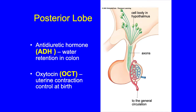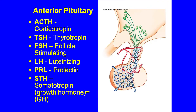The posterior lobe of the pituitary secretes antidiuretic hormone, which is involved in water retention in the colon, and oxytocin, which triggers uterine contraction at birth. The anterior pituitary has a bunch of different hormones — a lot of these growth hormones and things involved in the uterine cycle all come together there.